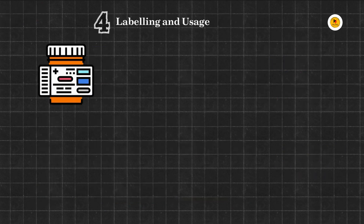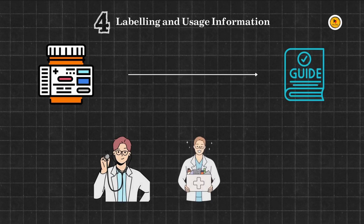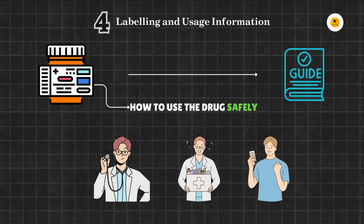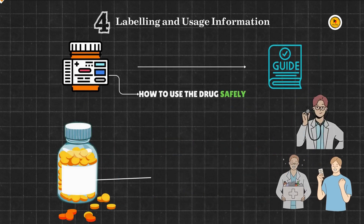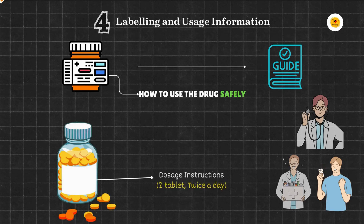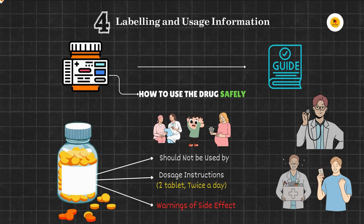The fourth important section of the New Drug Application is Labeling and Usage Information. This is not just the label on the drug bottle — it's a guide for doctors, pharmacists, and patients on how to use the drug safely. The labeling must include dosage instructions, which is how much and how often the drug should be taken, warnings about side effects, and details about who should or should not use the drug, for example, pregnant women, children, or people with certain conditions.